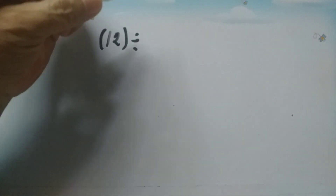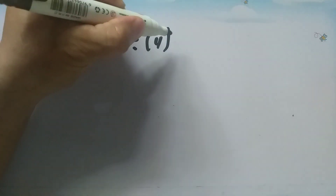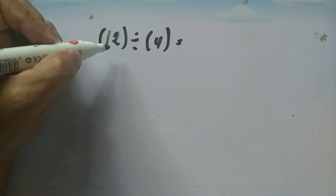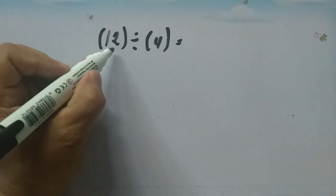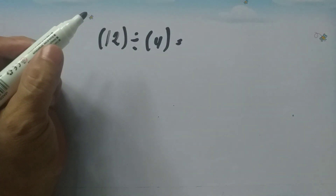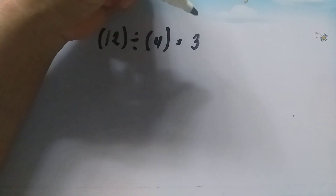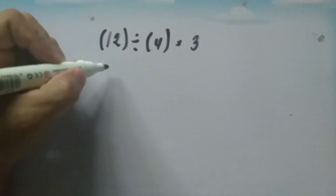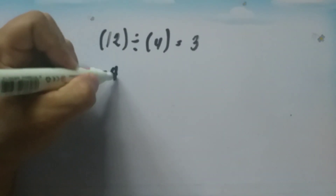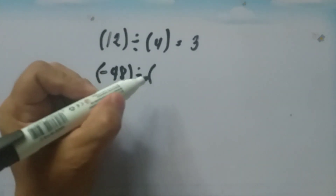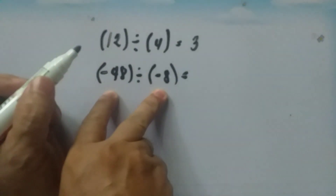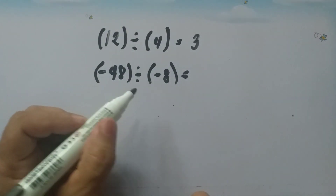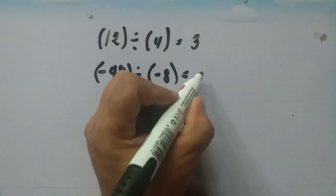For division of integers, the same rules apply just as in multiplication. If we have 12 divided by 4, we have two numbers with the same signs, so 12 divided by 4 equals positive 3. And if we have negative 48 divided by negative 8, we have two negative numbers — numbers with the same signs — so the quotient is 6.